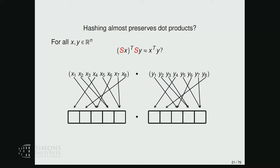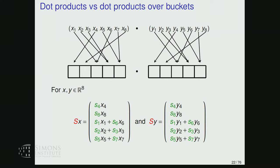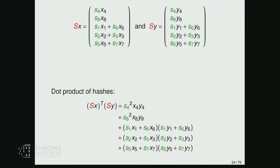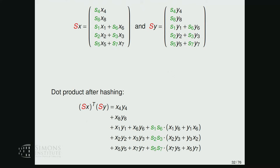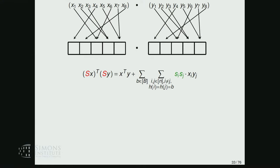For two vectors X and Y in R^n, we want to prove that the dot product between the count-sketched versions is close to the original one. Looking at an example in dimension eight with a hash function and comparing original versus hashed dot products, one observes that the difference consists of cross terms: for every two coordinates that collided in a bucket, we get an extra term equal to the product of their signs times the product of the corresponding values.